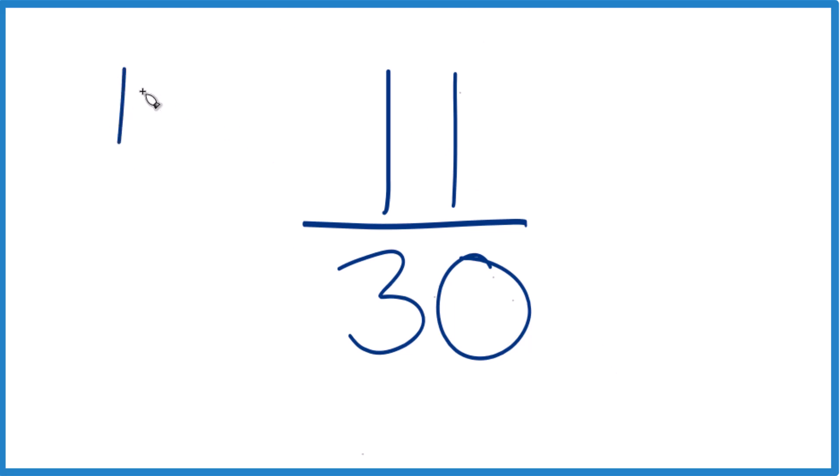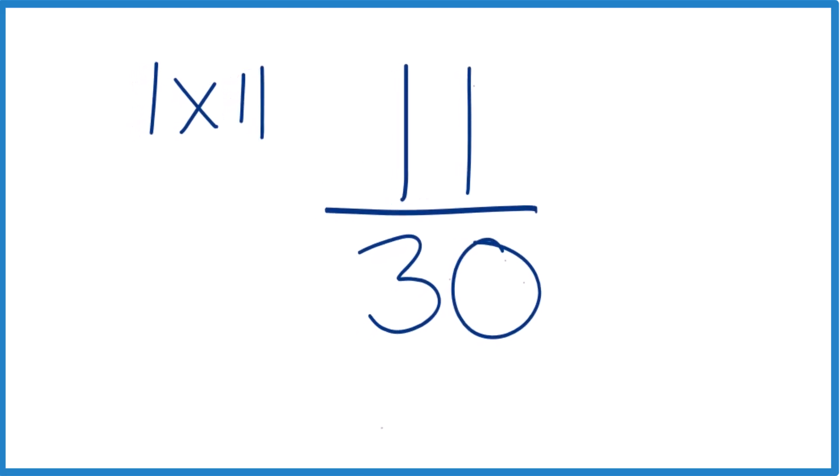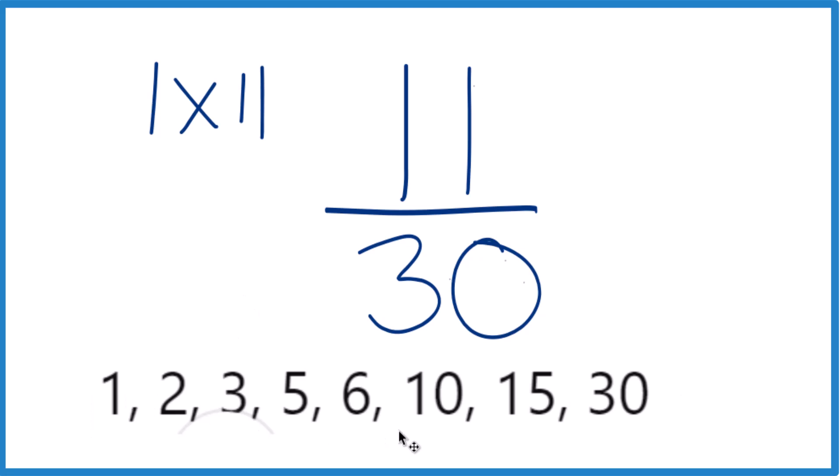Factors of 11: 1 times 11, that would equal 11, but that's it. For 30, there are a few more. You could have 1 times 30, 2 times 15, 3 times 10, or 5 times 6.